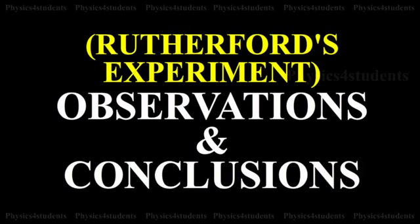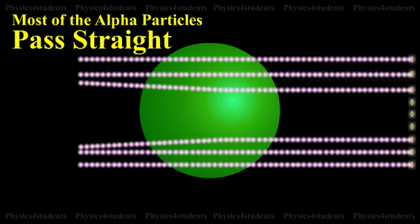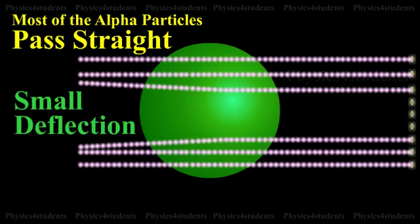Observations and conclusions inferred from Rutherford's experiment. Most of the alpha particles either passed straight through the gold foil or were scattered by only small angles of the order of a few degrees.